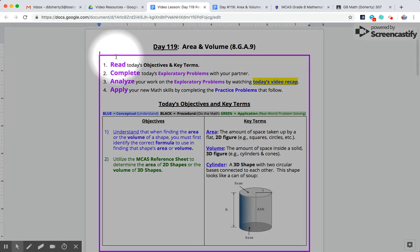By now we appreciate that you have already read through today's objectives and key terms. The objectives, your main learning goals, were found right here and the key terms which we need to read through each day were shown here. We appreciate that you also completed today's exploratory problems with your partner or at least attempted to complete those problems on your own, and now you're on step three where you're going to analyze your work on those problems by watching today's video recap.